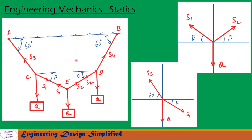Now let us see forces and reactions. At this point, a force weight Q is acting downwards, this side of the string will experience a tension S1, and this side of the string will experience a tension S3. Similarly, at point E, weight Q is acting downwards, this side S1, this side S2. At D also, Q is acting downwards, this side S2, this side S4.